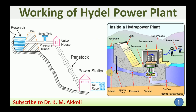Here we have a three-dimensional diagram to discuss, and later we will also discuss the 2D sketch, and after that we will see an animation. Whenever water is stored at a certain height it will have potential energy, and when it is allowed to flow, the potential energy will be converted into kinetic energy. During the flow it will have both kinetic and pressure energy.